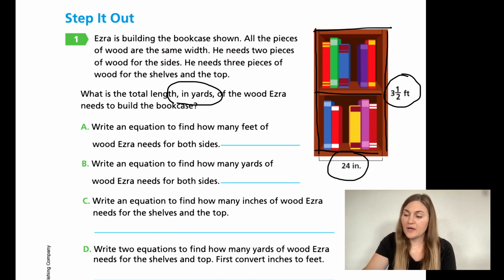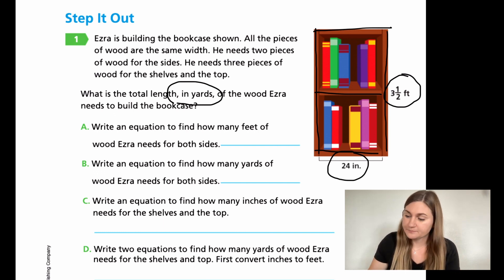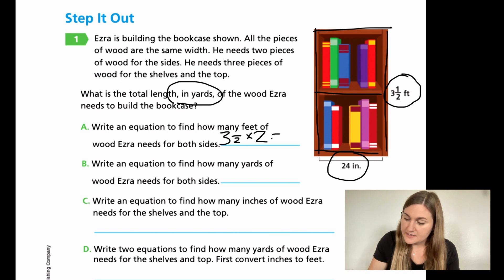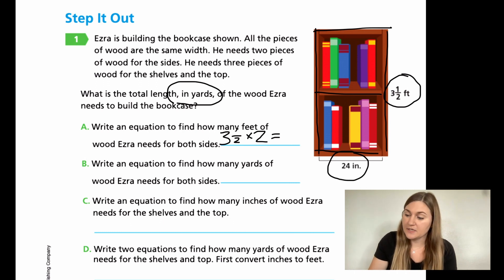So for A, it says write an equation to find out how many feet of wood Ezra needs for both sides. I know that one side is three and a half feet and there are two sides, so I'm going to be multiplying that three and a half by two. Three and a half times two — three times two is six, and the half times two is one, so six plus one is seven. That would be seven feet.